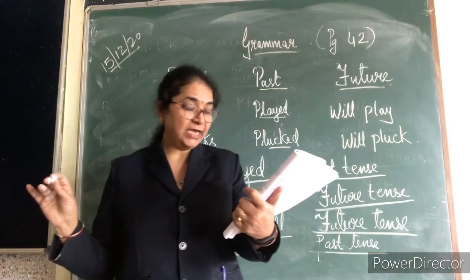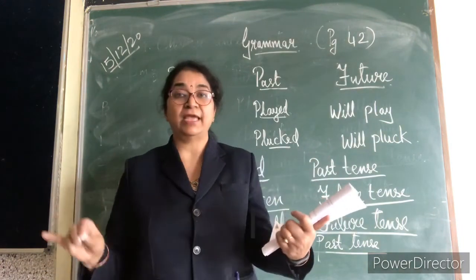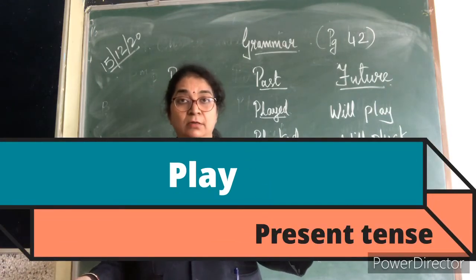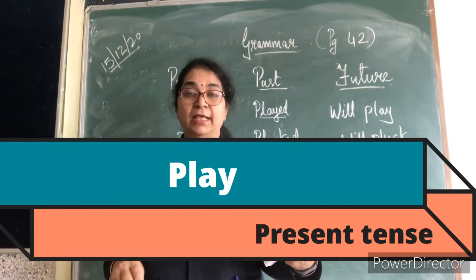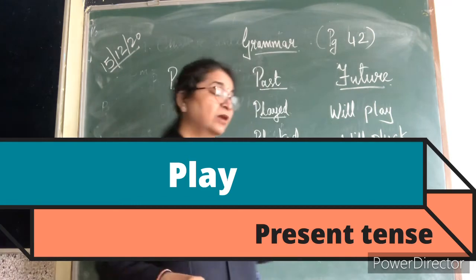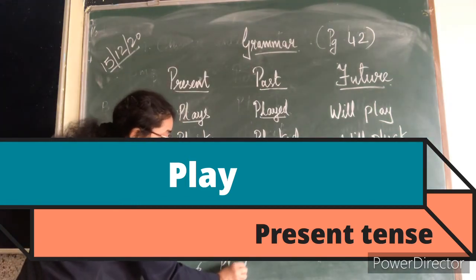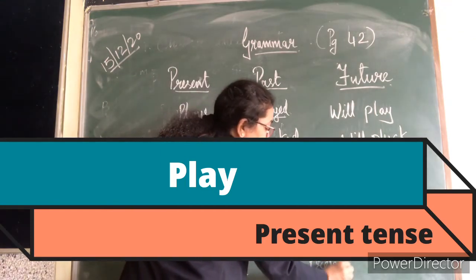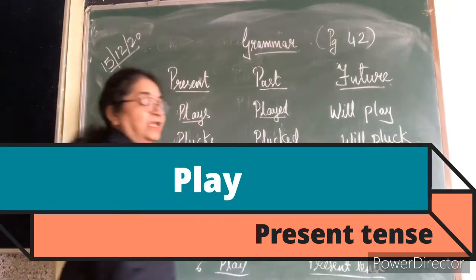Last sentence: Ravi, Ali and John play together everyday. Play — jo kar rahe hain. They play, that is present. So the verb is play, and which tense? Present tense.